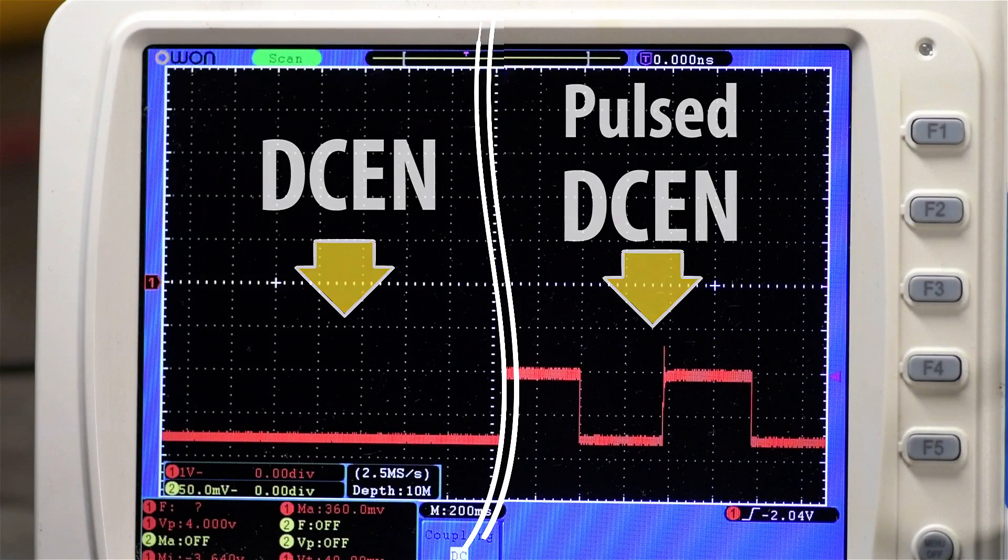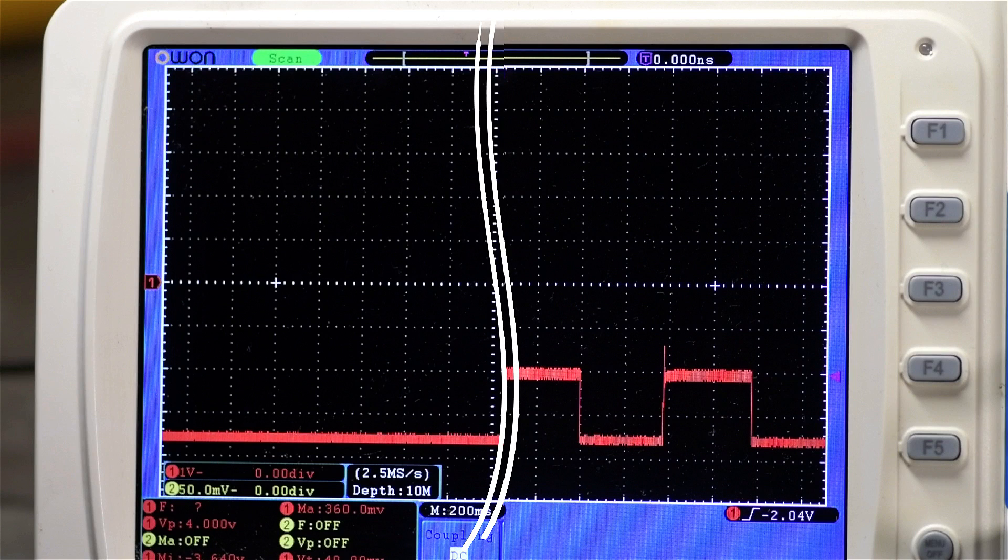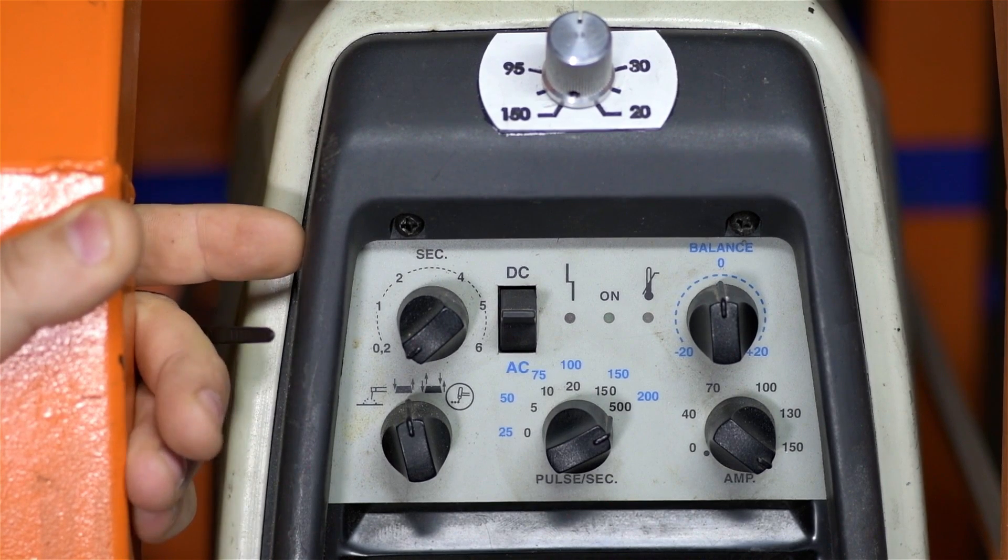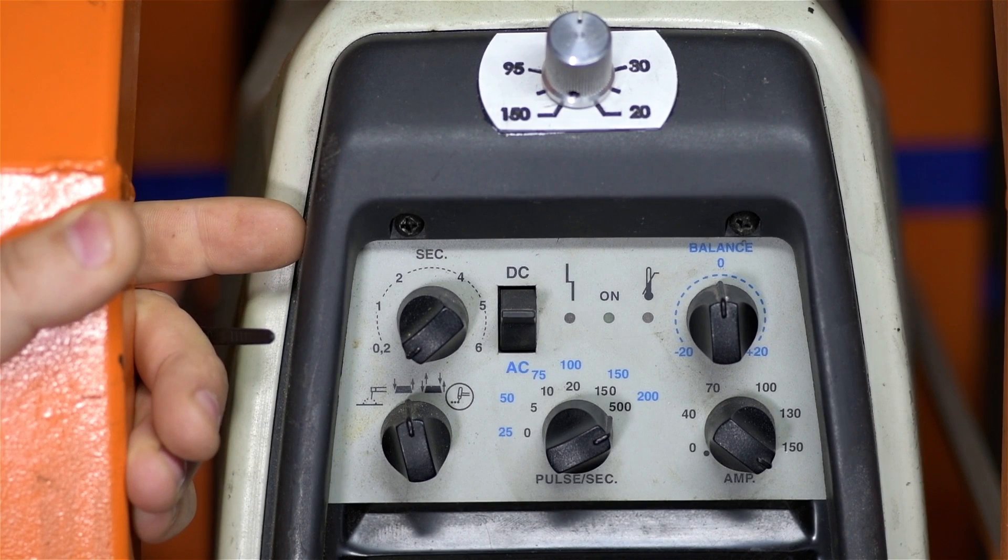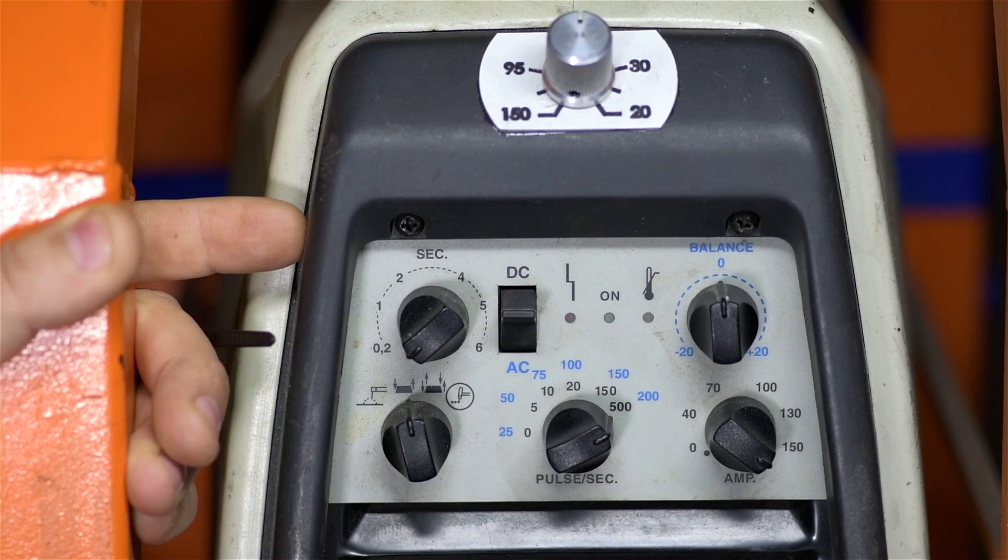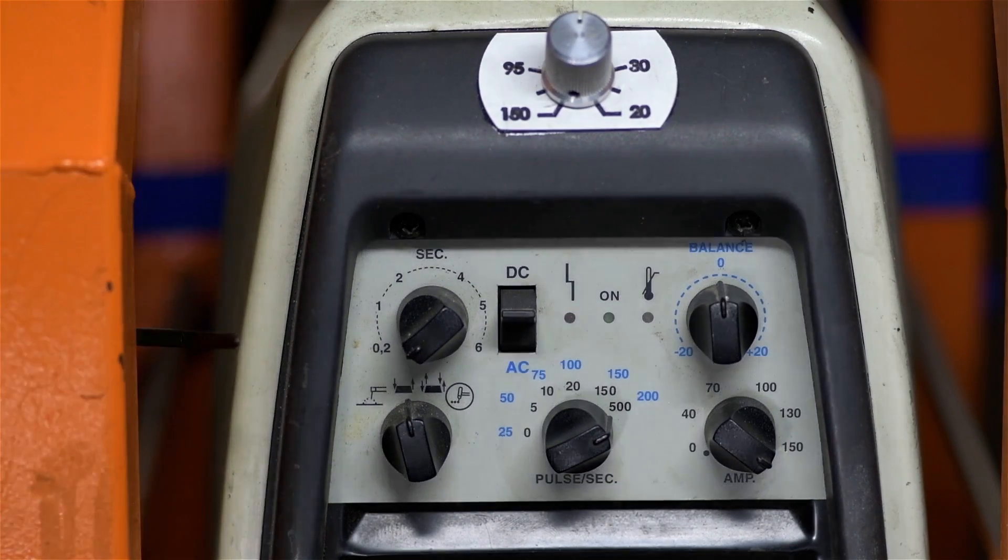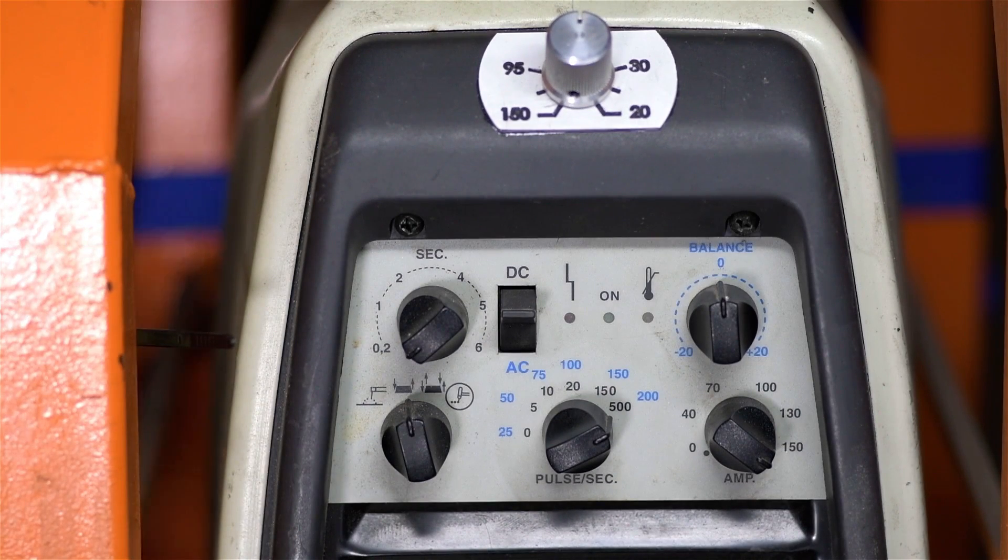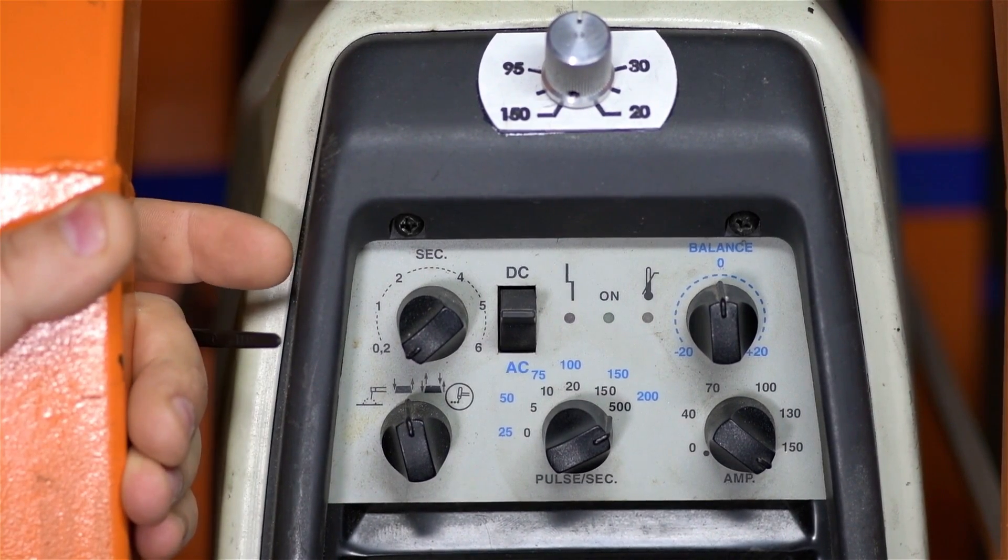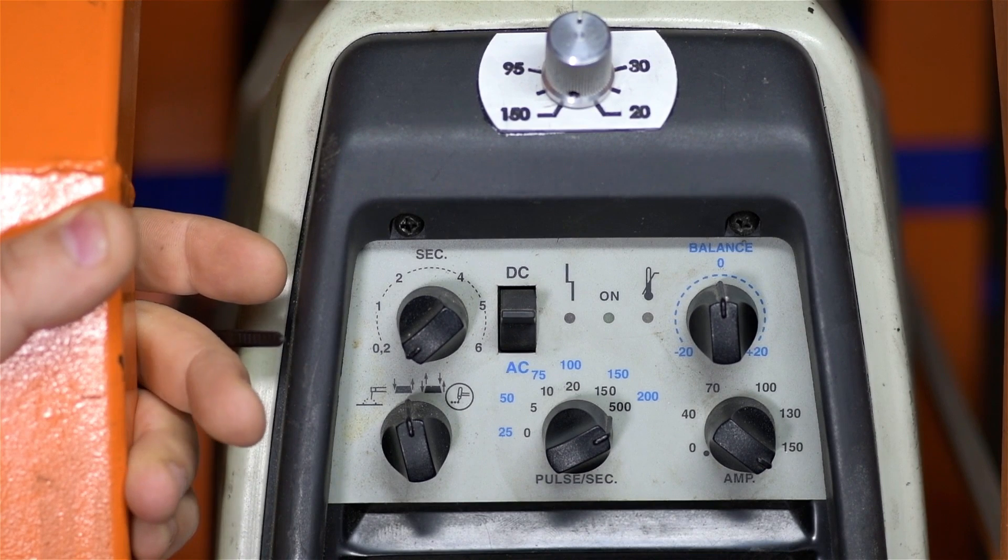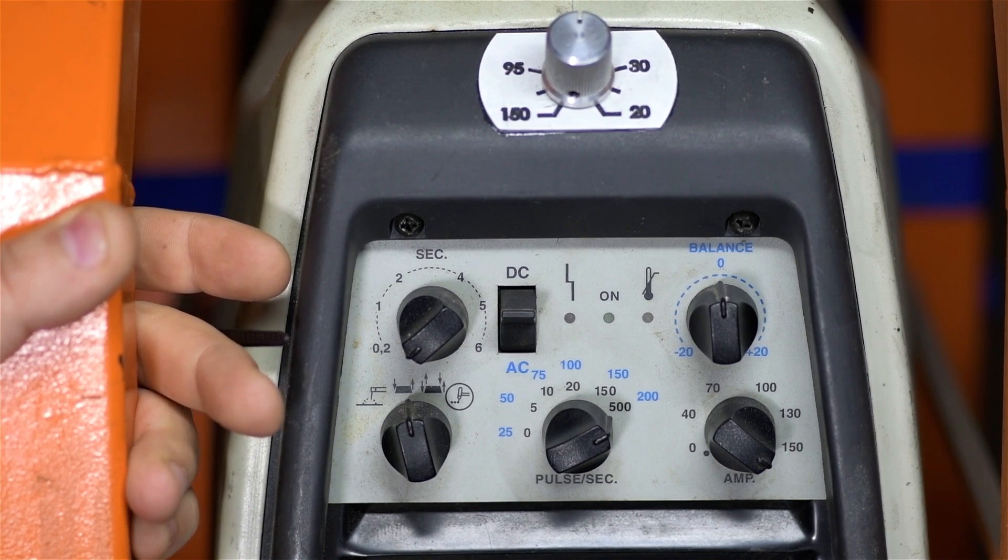So there you have it. That's what DC electrode negative looks like and pulsed electrode negative. With that, let's take a look at AC settings, where the current does switch directions while we're welding. Perhaps I should take a moment to apologize. Maybe I should have said this earlier. I do realize that a lot of what I'm talking about assumes some amount of familiarity with TIG welding on your part that I've needed to take for granted.